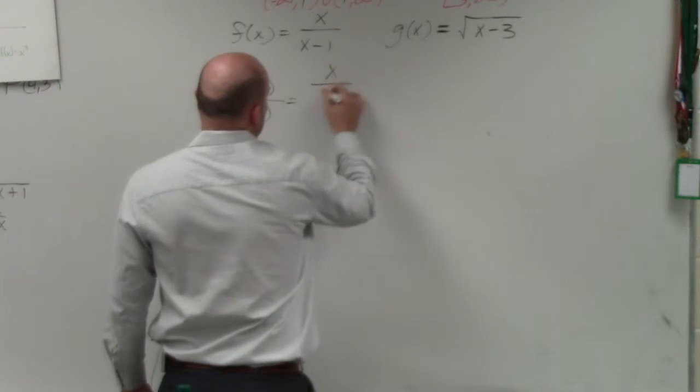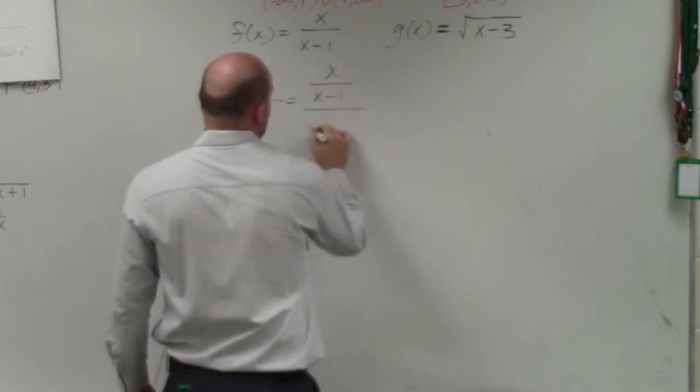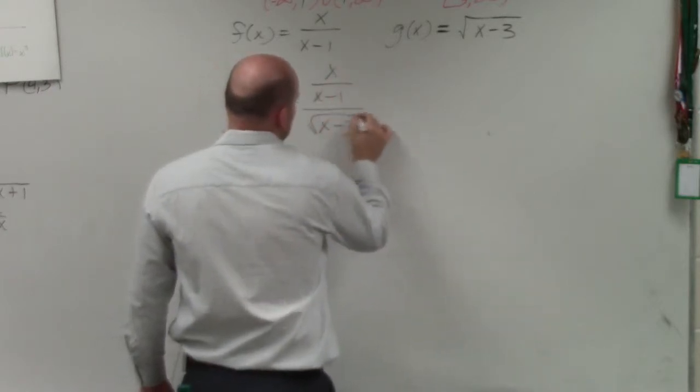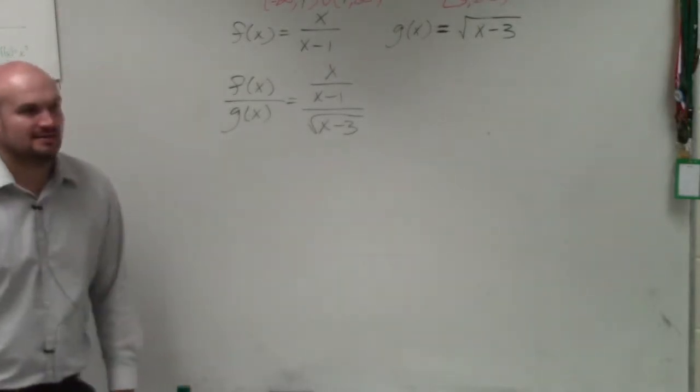So I have x over x minus 1 divided by the square root of x minus 3. What the heck am I going to do here?